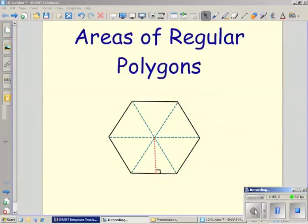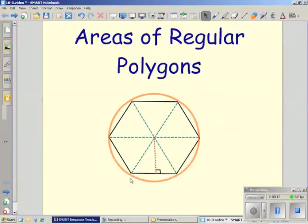In this lesson, we will learn how to find the areas of regular polygons. We can circumscribe a circle about any regular polygon, like this.